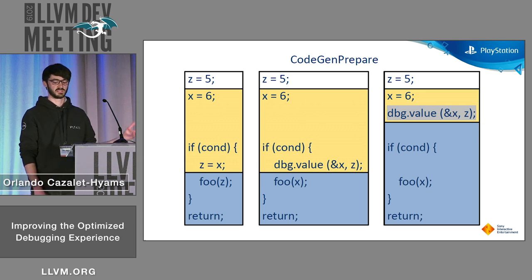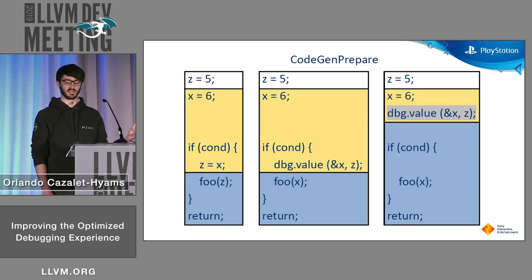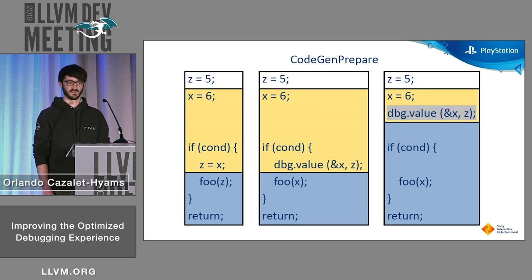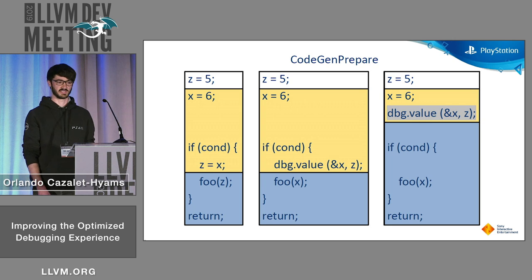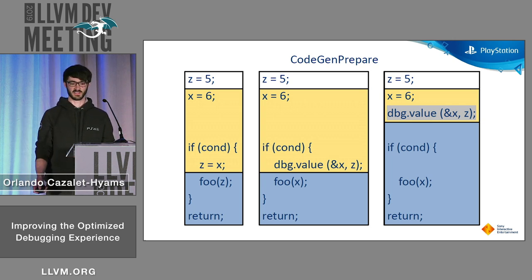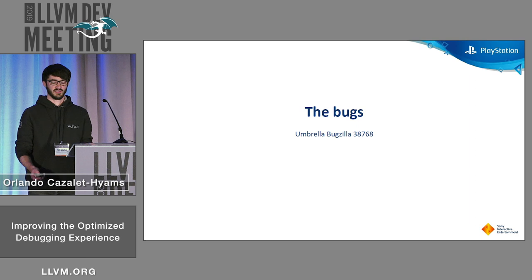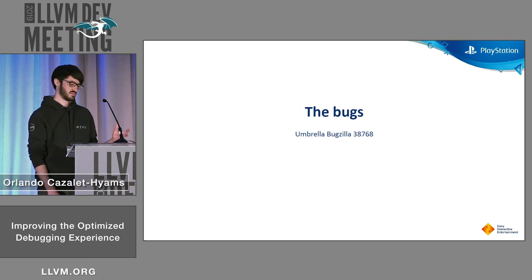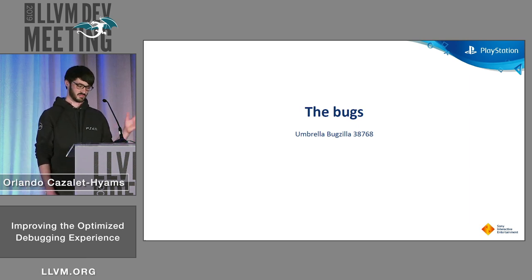And now when the user steps through the program, they see Z having the value 6 in this blue range, regardless of the value of cond, even though it was originally in an if statement and before the actual source-level assignment — so really lying to developers, pretty bad. It turns out that exact bug is pretty trivial to fix, but subsequent passes rely on that broken behavior, so it's still not fixed.